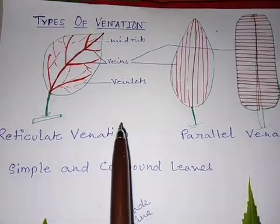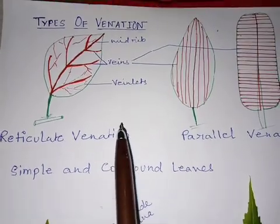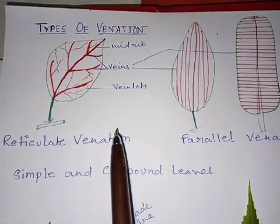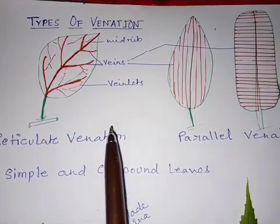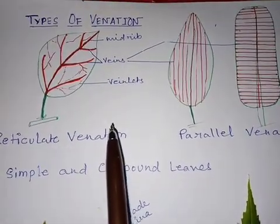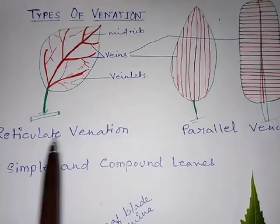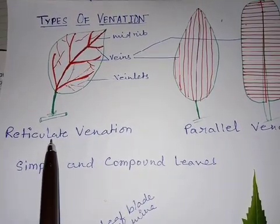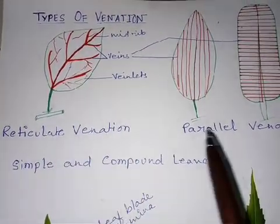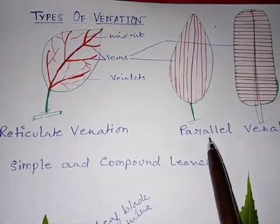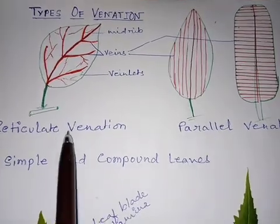What is venation? Venation is the arrangement of veins in the leaf lamina. There are two types of venation — you can see in the picture: reticulate venation and parallel venation.